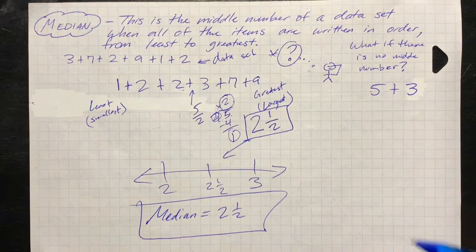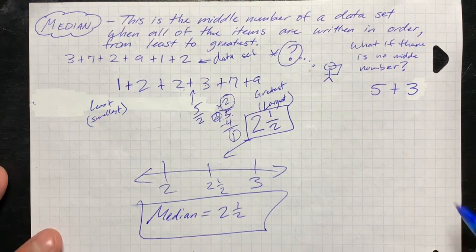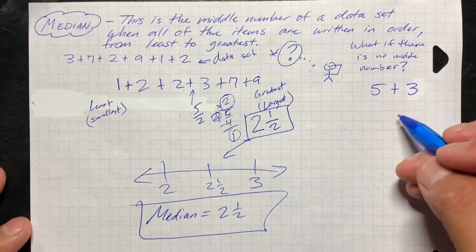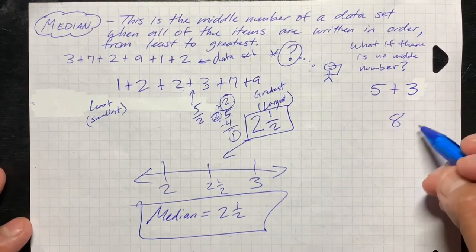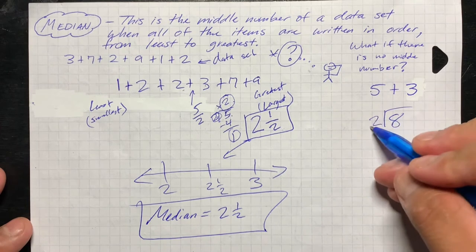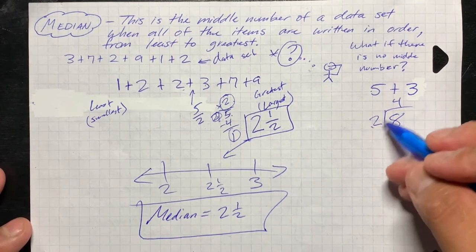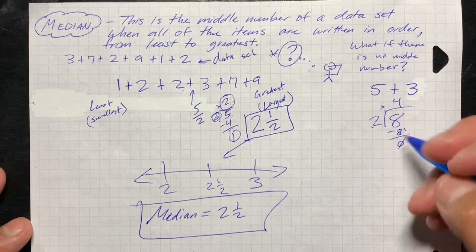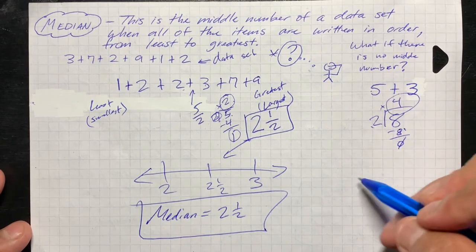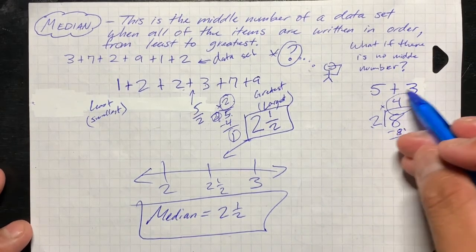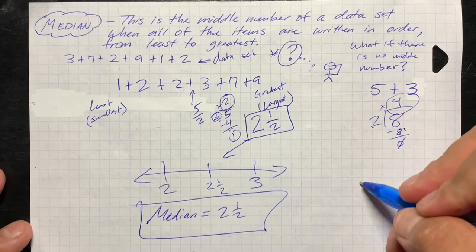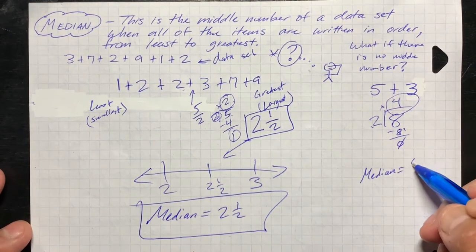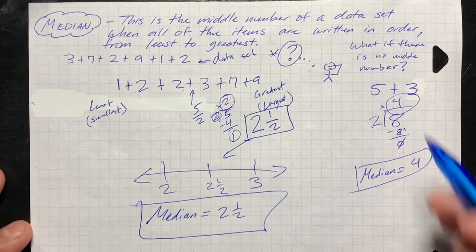Same thing if you just have two numbers and there's no median. Just add them together: five plus three equals eight, and there are two numbers, so divide by two. Two can go into eight four times — two times four equals eight, remainder zero. Your quotient is four. So for a data set with five and three, your median is going to be four — right in the middle.